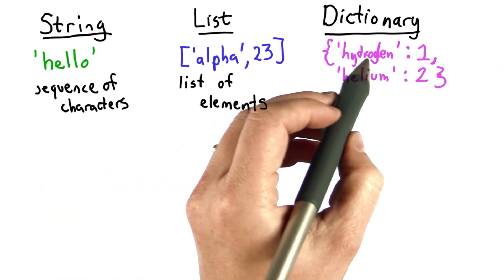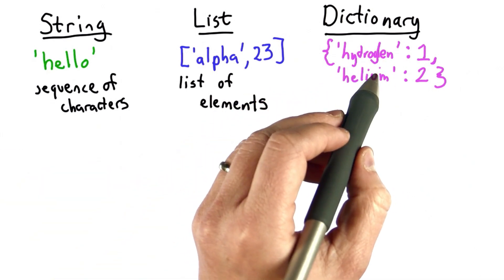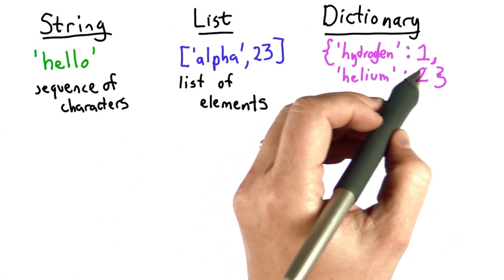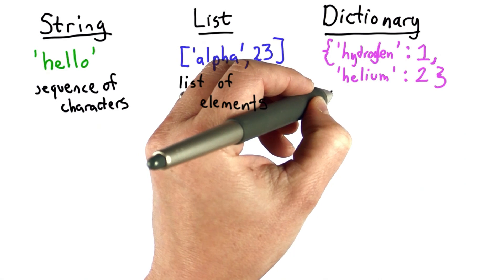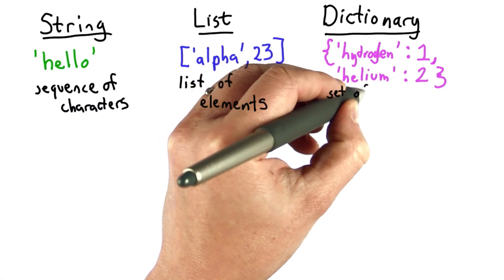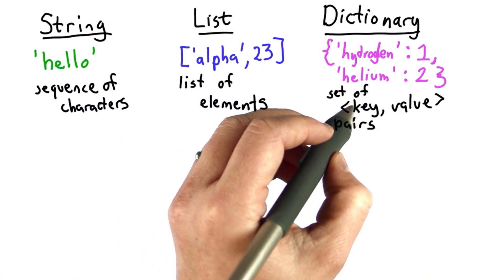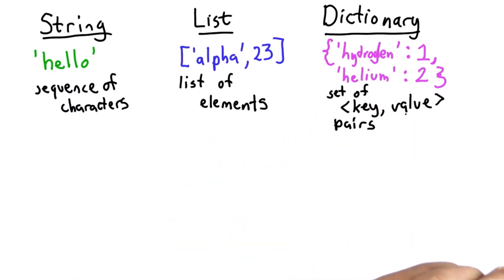The keys in a dictionary can be any immutable value, so they don't need to be strings. They could be numbers. They could be other things. The values can be any value. So what a dictionary is, is a set of key value pairs, and the property that a dictionary will give us is like the hash table, that we can look up a key and get the value associated with that key.